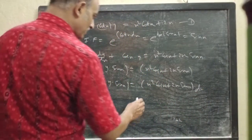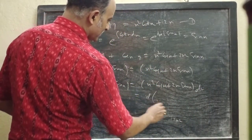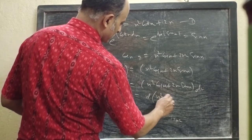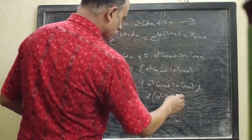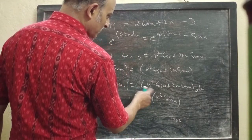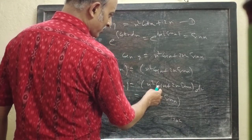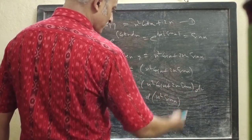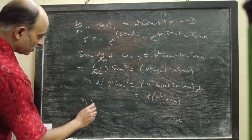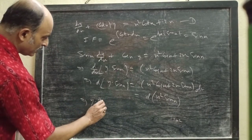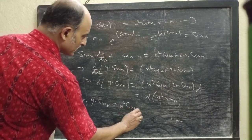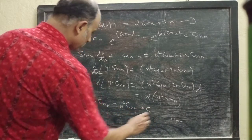Now the right side can also be written as d of x² sin x, by the product rule: x² remains fixed, sin x differentiates to cos x, plus sin x fixed, x² differentiates to 2x cos x. So we can write the solution as y sin x = x² sin x + c.